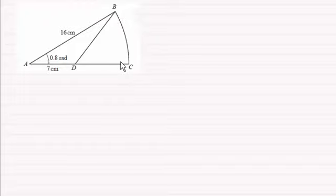So to do this all we've got to do is work out the area of the sector and subtract the area of the triangle ABD, and that will give us the area BDC.